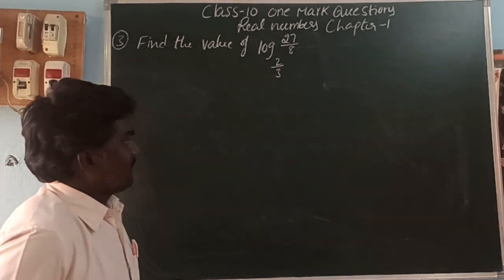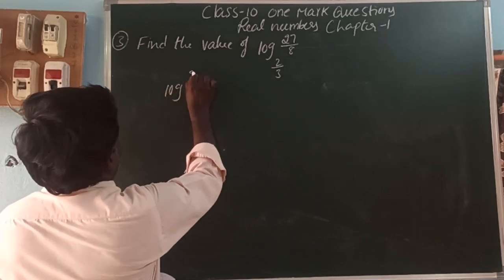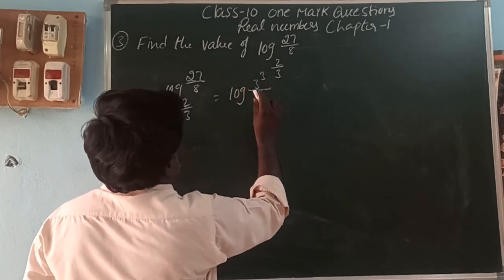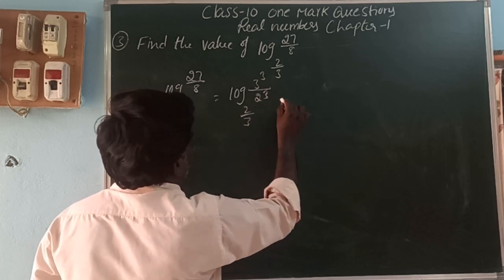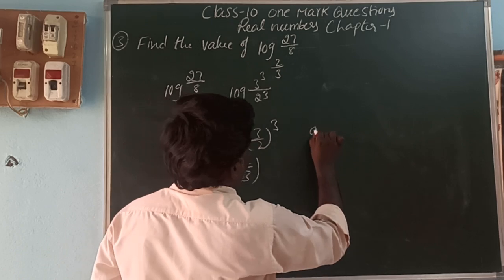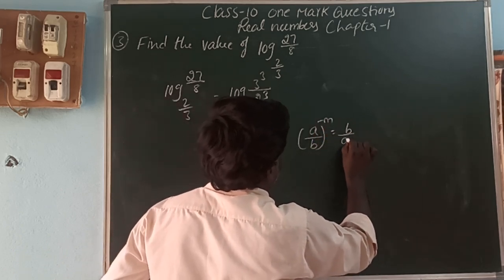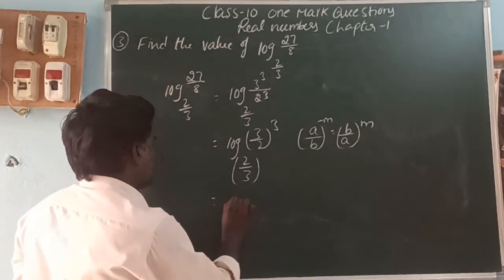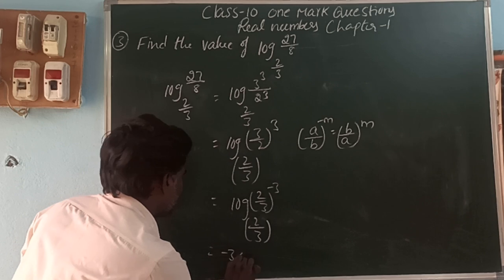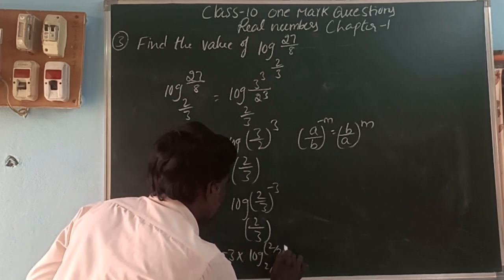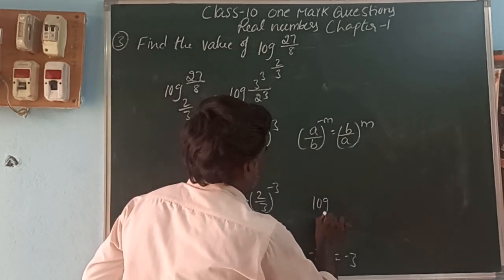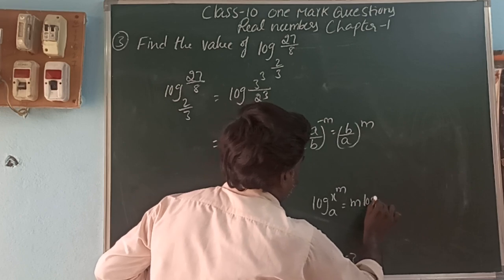Find the value of log(27/8) base (2/3). Here 27 = 3³ and 8 = 2³, so log(3³/2³) base (2/3), which is log(3/2)³ base (2/3). Now using the law (a/b)^(-m) = (b/a)^m, we write (3/2)³ as (2/3)^(-3). So this becomes -3 into log(2/3) base (2/3) = -3 into 1 = -3. Using the fourth law: log(x^m) base a = m·log x base a.